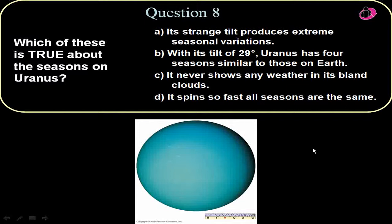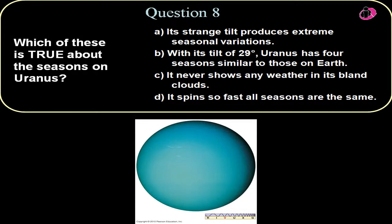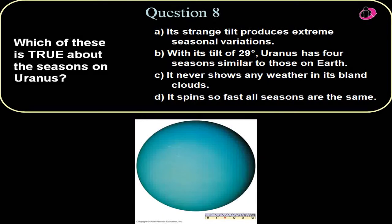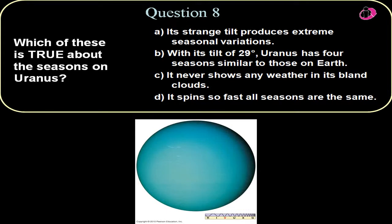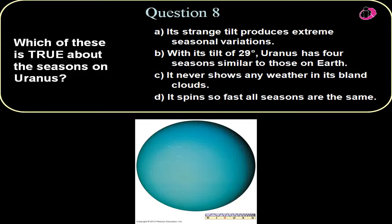Question eight. Which of these is true about the seasons on Uranus? Uranus takes 84 years to go around the Sun and it's tilted 98 degrees. So it's tilted almost a right angle so that its axis is almost directed right along the ecliptic plane. So there's going to be the one pole of the Uranus is going to be facing towards the Sun for 42 years. Hence, there's going to be more of a dramatic seasonal variation on Uranus as a function of years.